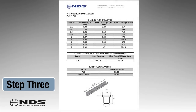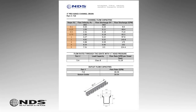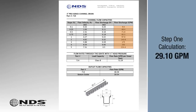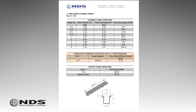Step 3: Find the slope on the table closest to the slope of the ground where the channel drain will be installed. Follow that row to the flow discharge column. Compare the flow rate in the flow discharge column to the runoff calculated in Step 1. If the flow rate in the flow discharge column is less than the calculated runoff, choose a larger channel drain. If the flow rate in the flow discharge column is larger than the calculated runoff, then move down to the next table.